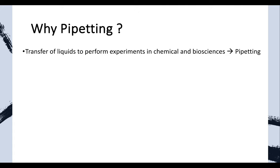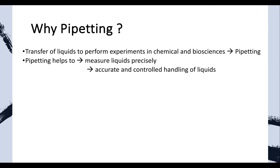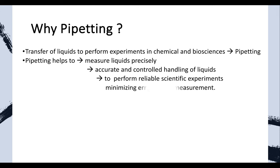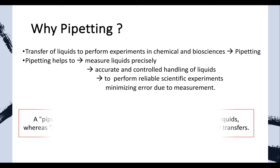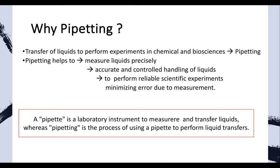In chemical and biochemical sciences, transfer of liquids is a very important aspect, and pipetting helps us to perform that. It helps to measure liquids precisely and accurately in a controlled way. It also helps to perform different kinds of scientific experiments, particularly minimizing errors due to measurement. One important distinction: a pipette is an instrument, whereas pipetting is the method or process by which we actually transfer liquids.